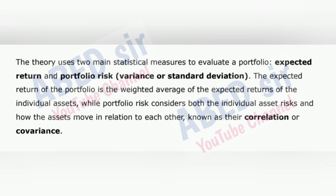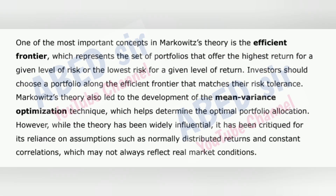Portfolio risk is measured by variance or standard deviation. The expected return of the portfolio is the weighted average of the expected returns of the individual assets, while portfolio risk considers both the individual asset risks and how the assets move in relation to each other — known as their correlation or covariance. One of the most important concepts in Markowitz's theory is the efficient frontier, which represents the set of portfolios that offer the highest return for a given level of risk, or the lowest risk for a given level of return. Investors should choose a portfolio along the efficient frontier that matches their risk tolerance.